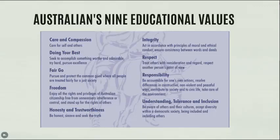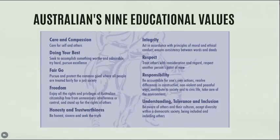So what are these values? Australia appeals to nine different educational values. One: care and compassion — caring for yourself and for others. Two: doing your best — trying hard, hard work. Three: fair go — pursuing and protecting the common good where all people are treated fairly, essentially justice. Four: freedom — ensuring that everyone has freedom. Five: honesty and trustworthiness. Six: integrity. Seven: respect. Eight: responsibility. And nine: understanding, tolerance, and inclusion. Do you think all of these values are necessary for education? Is anything missing?